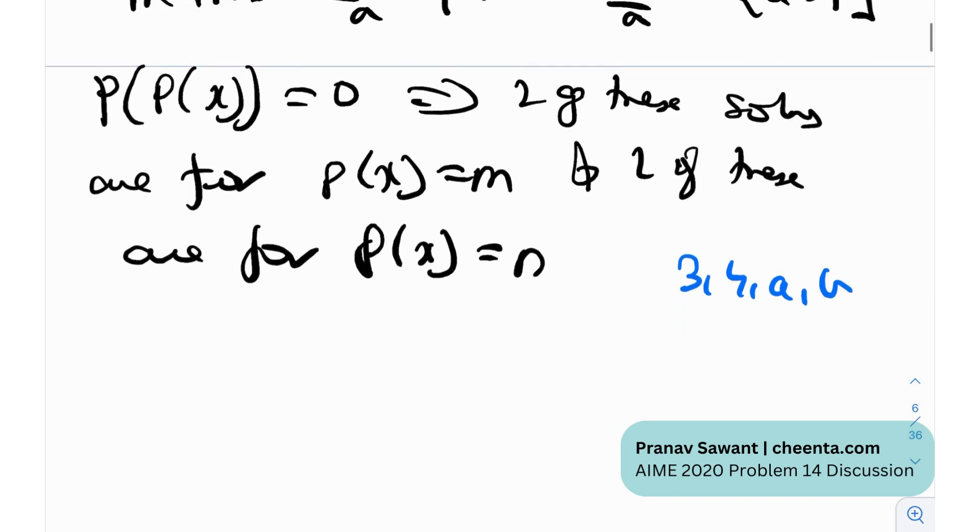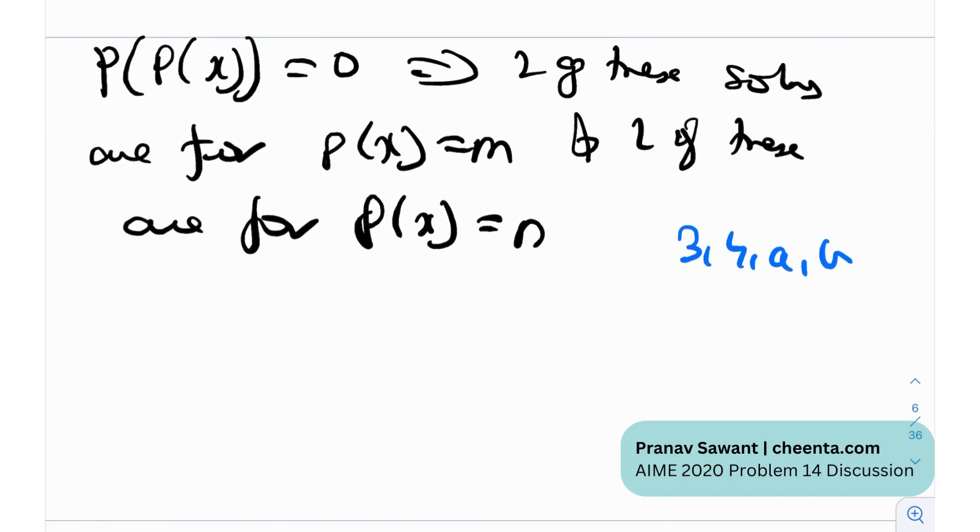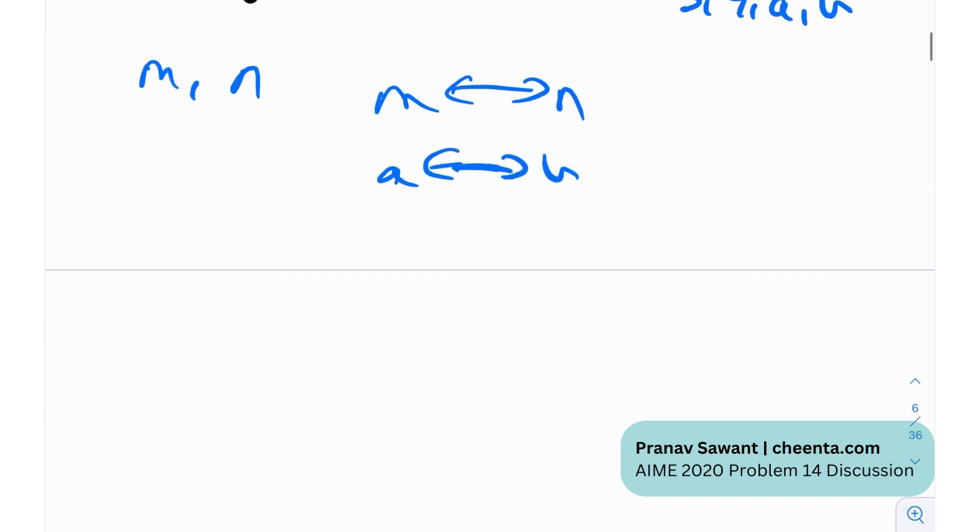As you can see the beauty of symmetry over here, m comma n are interchangeable, and also a comma b are also interchangeable. This is a slight symmetry in the problem. So now using that, why is it important? Because we can just resolve this into two basic cases actually.